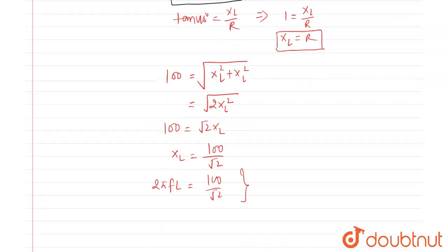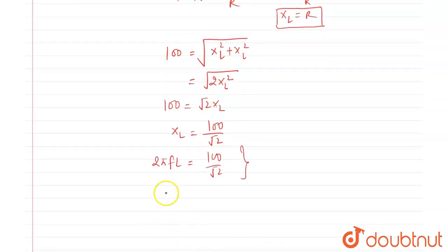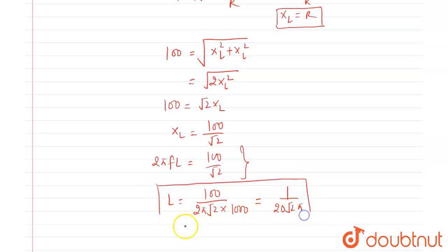So L is equal to 100 upon 2 pi root 2 into 1000. Frequency of the source is 1000. So that is equal to 1 upon 20 pi root 2, which means 1 upon 20 root 2 pi. That is the value of inductance, and the unit is Henry.